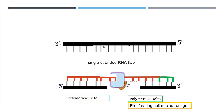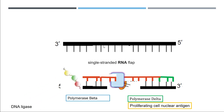Now the DNA nucleotides are made but are not yet joined — they are in pieces. The protein that joins all these fragments together is called DNA ligase. DNA ligase attaches itself to all the strands and joins them together, giving us a smooth new daughter strand of DNA without any RNA primer.